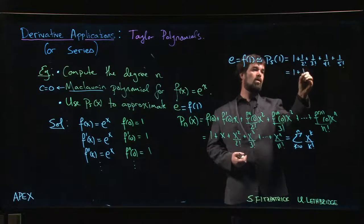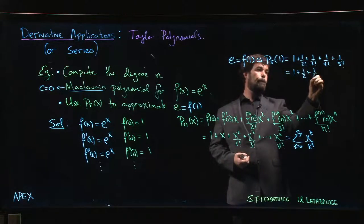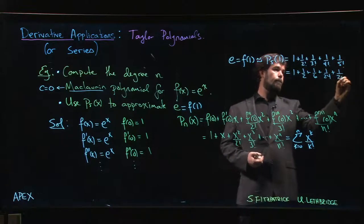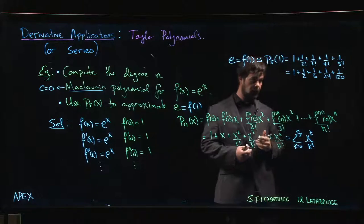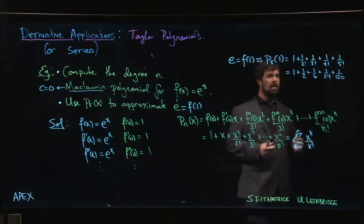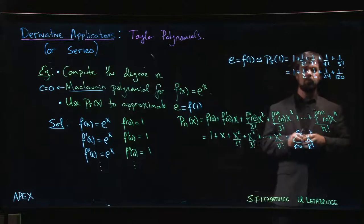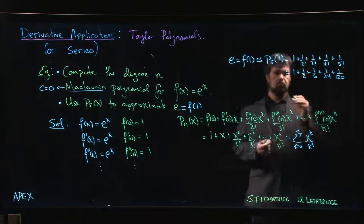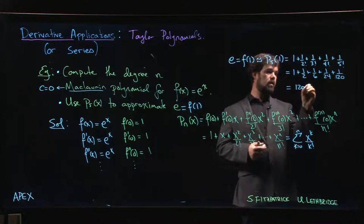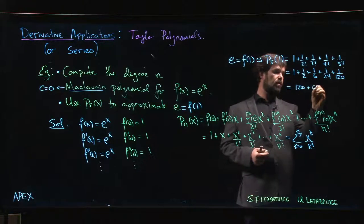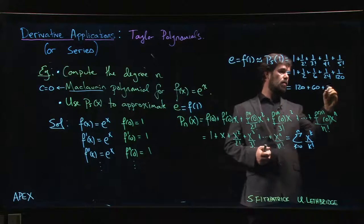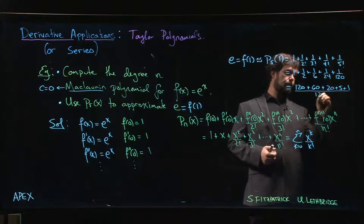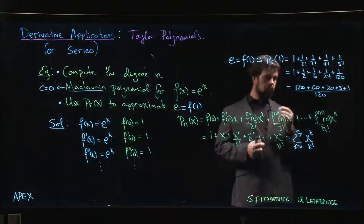If you want to work those out, you get up to there. And if you want to go a little bit further, you can get everything over a common denominator. 120 plus 60 plus 20 plus 5 plus 1 over 120.